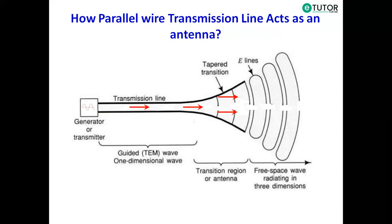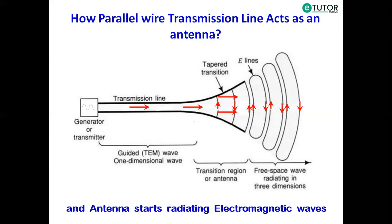Inside the transmission line and the antenna, the electromagnetic waves are sustained due to the charges — that is, the positive half cycle and the negative half cycle. But as soon as they enter into free space, where the transmission line ends, they form closed loops like this. These closed loops are nothing but electromagnetic wave radiation. This is how the antenna starts radiating electromagnetic waves.